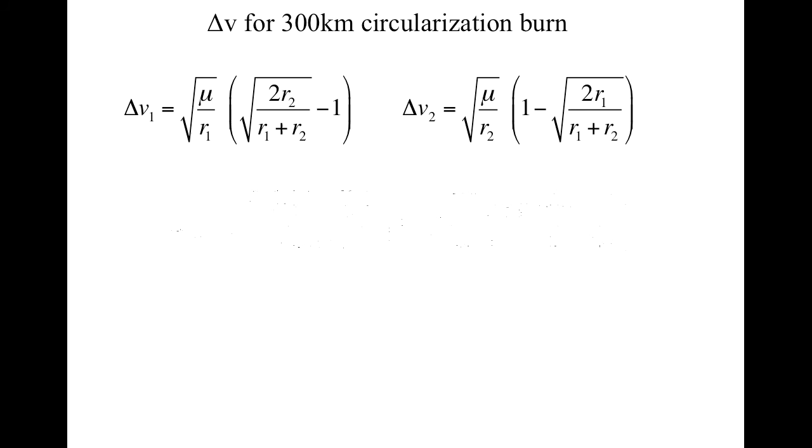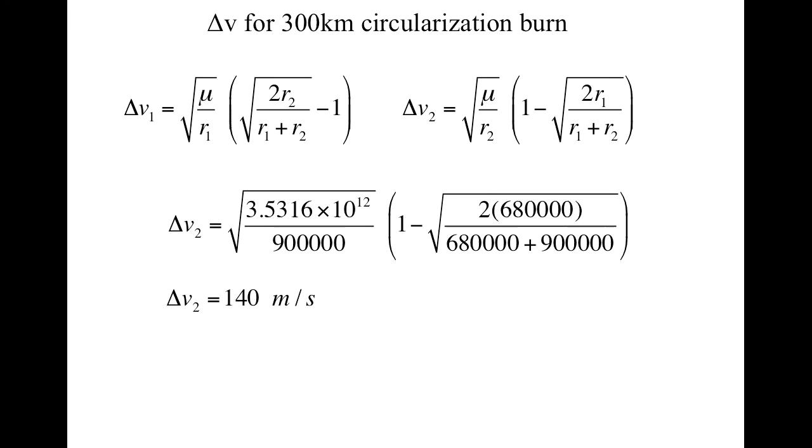So how about the second burn that circularizes at 300 kilometers? So here's our first formula. Recall that we got this by taking the required velocity at periapsis and subtracting our current circular orbital velocity. All we do is the exact same thing at apoapsis. The only difference is that now our final velocity will be the circular one. So we subtract the other way around. This gets us this formula. If you compare the two, you'll see two differences. The subtracting is the other way around, and the R1's and R2's have been switched. Putting the same numbers into the formula gets us about 140 meters per second.